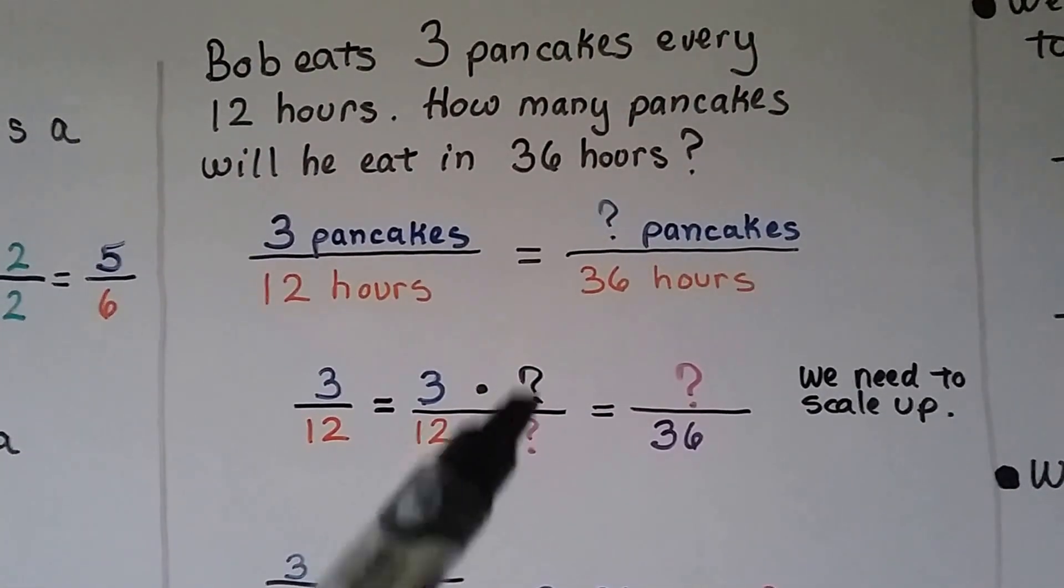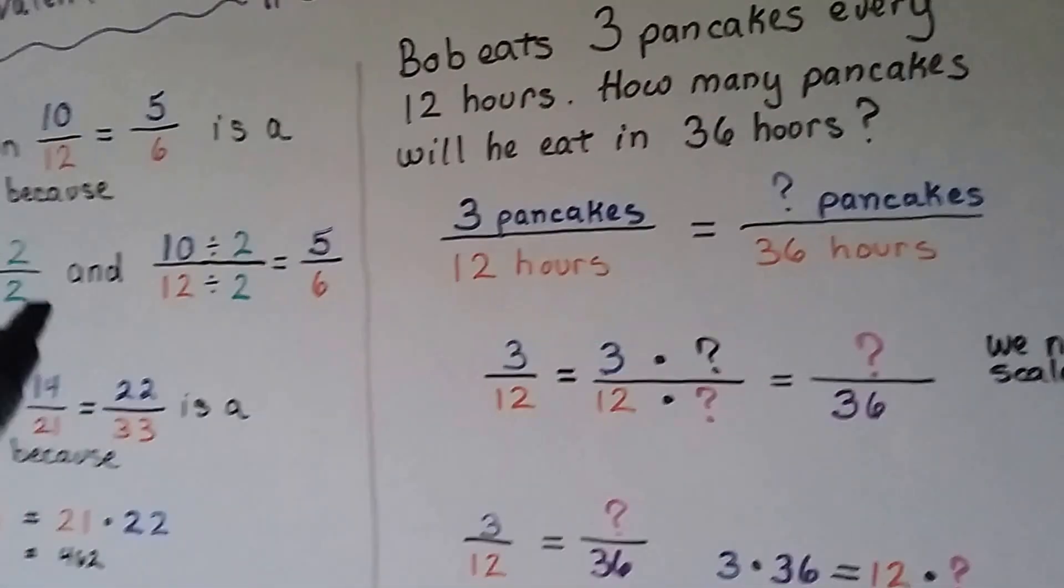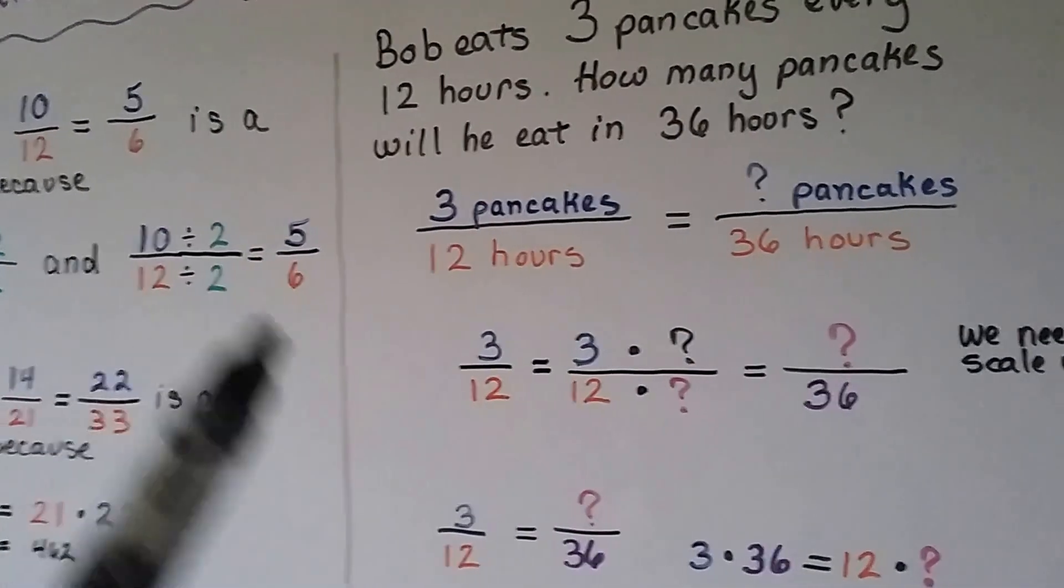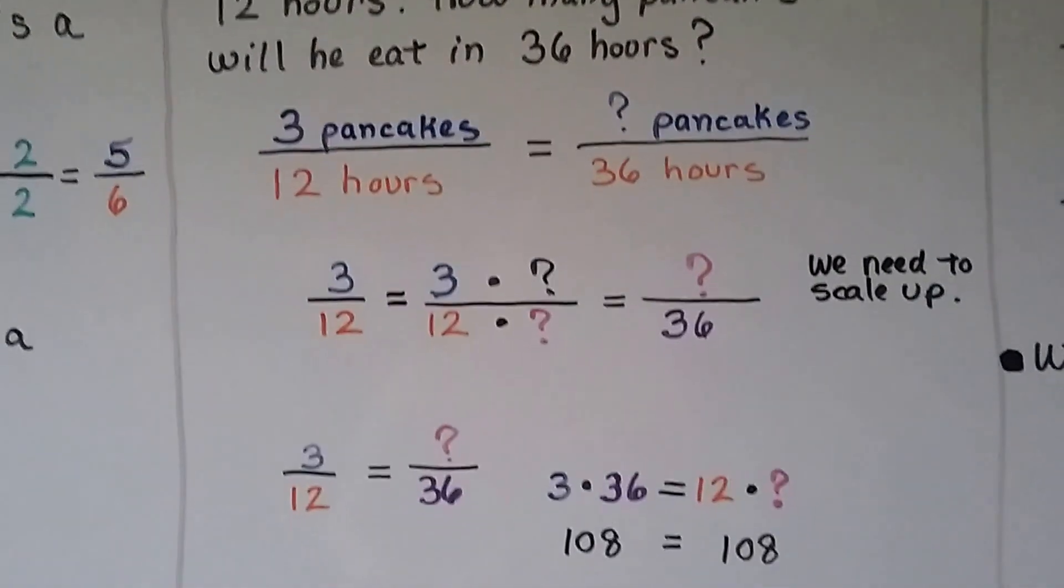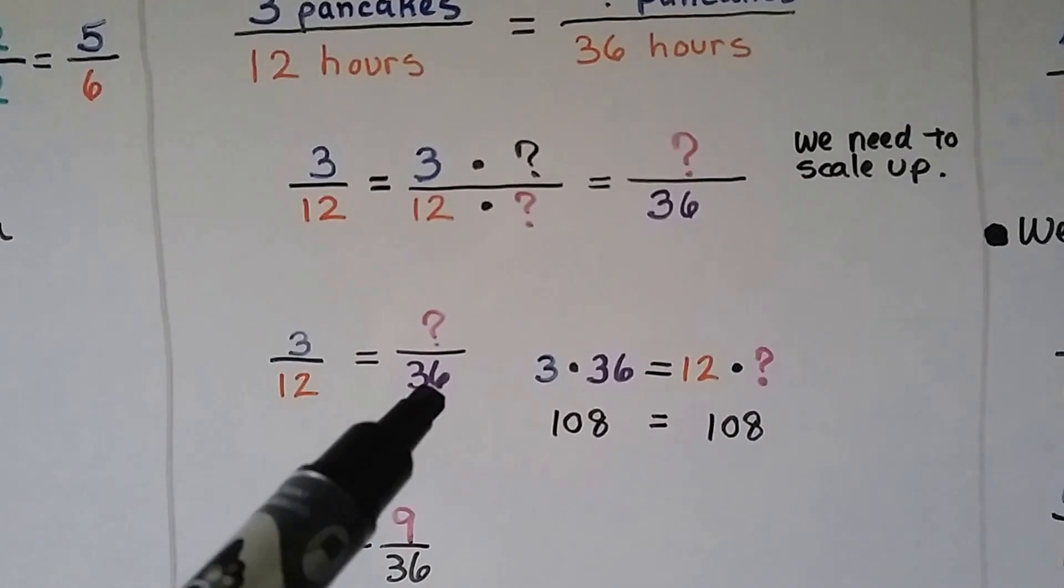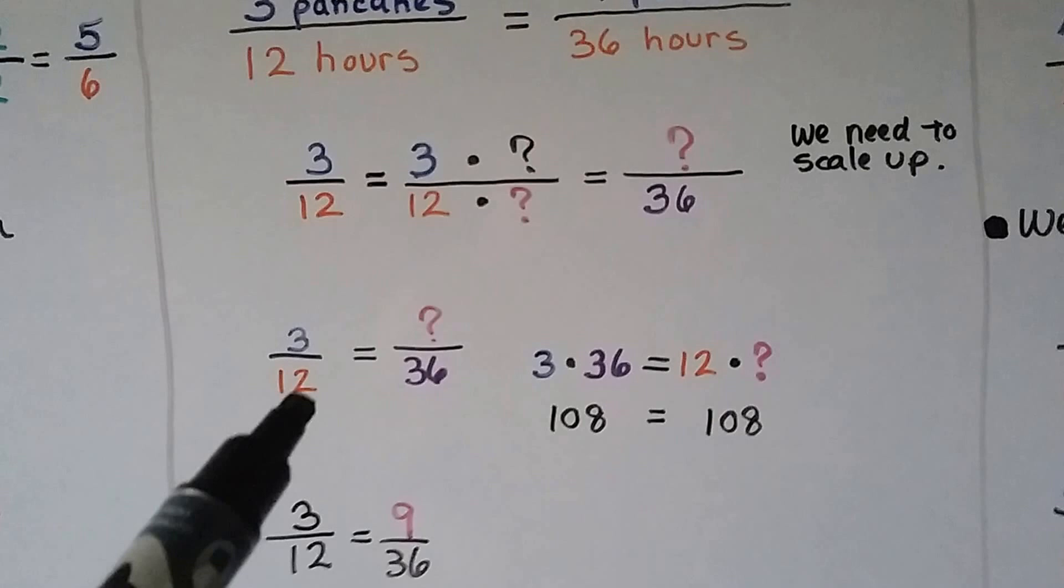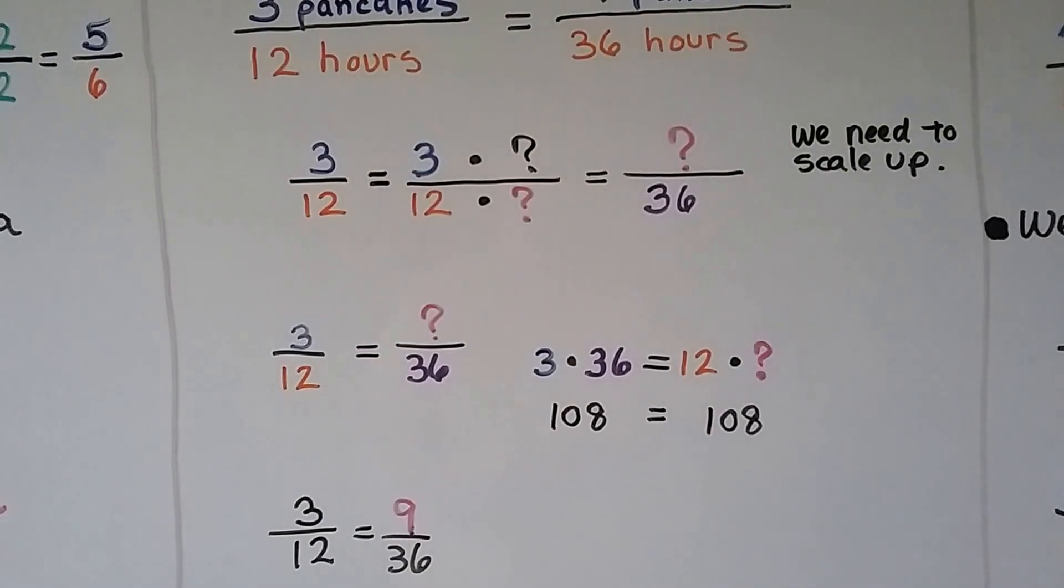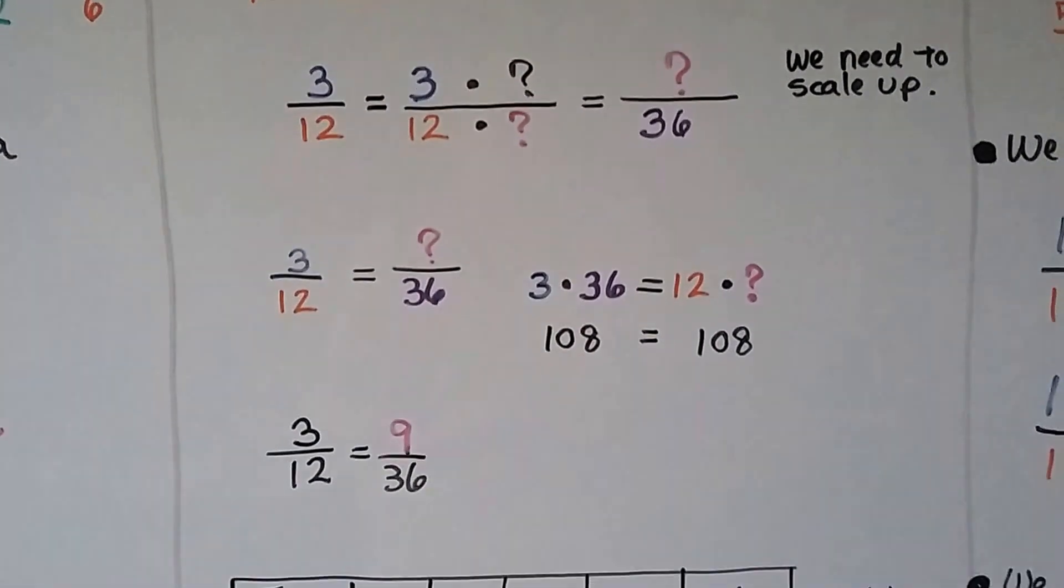That means we have to multiply the pancakes by 3, so we're going to get a 9 there. They need to be multiplied by the same number, so they're both going to get multiplied by 3, and that's going to give us 9. We can also do cross products. We can say 3 times 36, which is 108, equals 12 times something that equals 108. 12 times 9 equals 108, so we know 9 goes there.